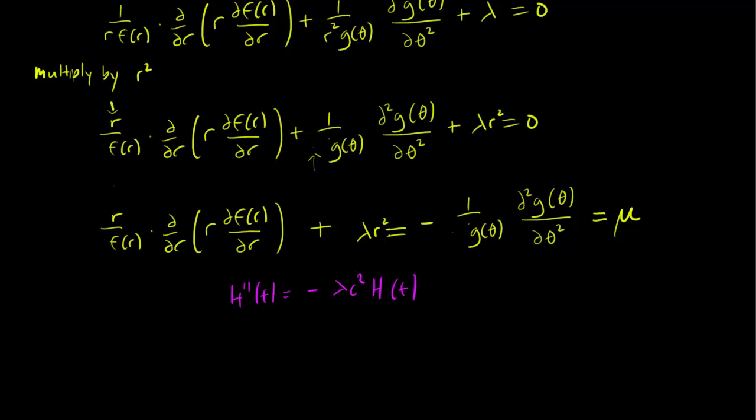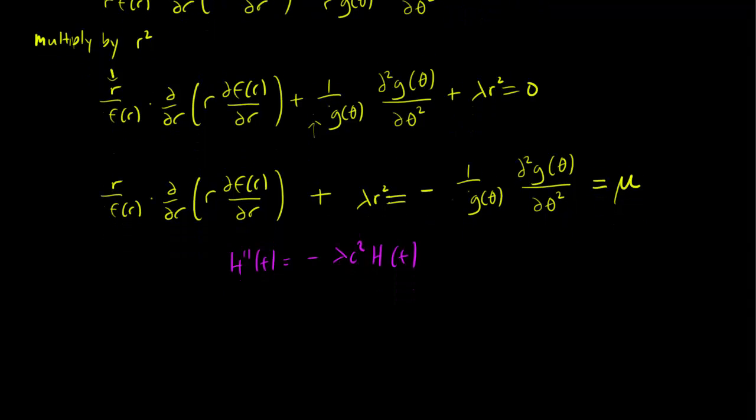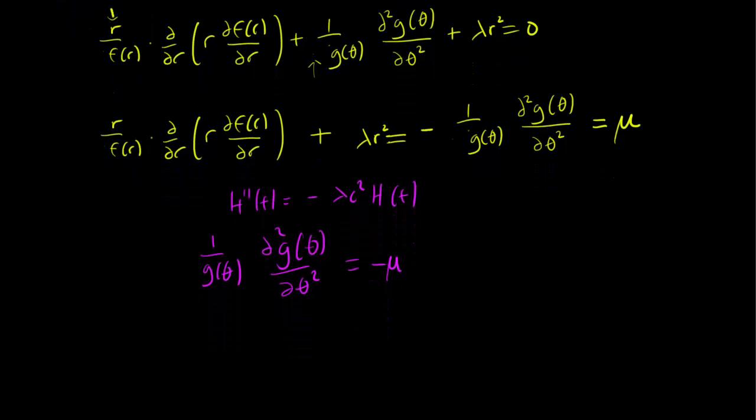The second equation is given by g(θ): (1/g(θ))(∂²g/∂θ²) = -μ, or equivalently, ∂²g/∂θ² + μg = 0.